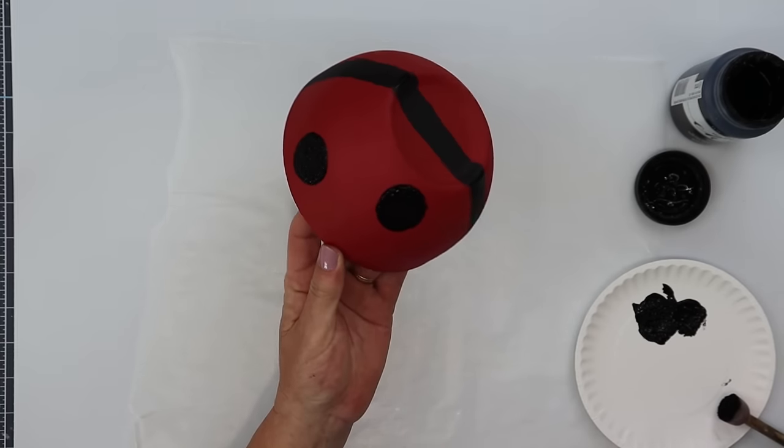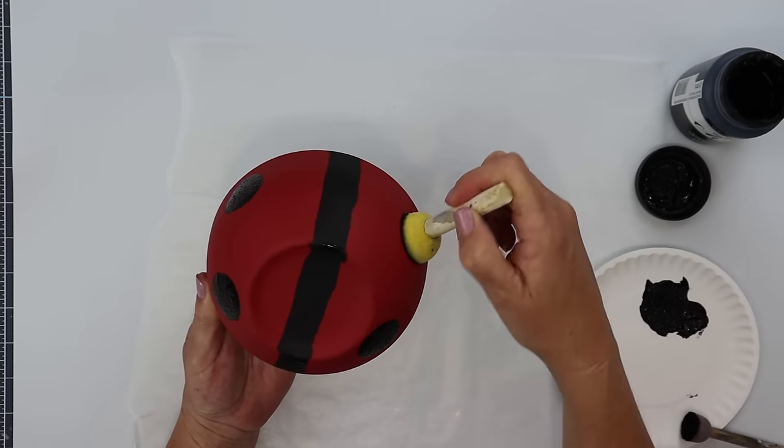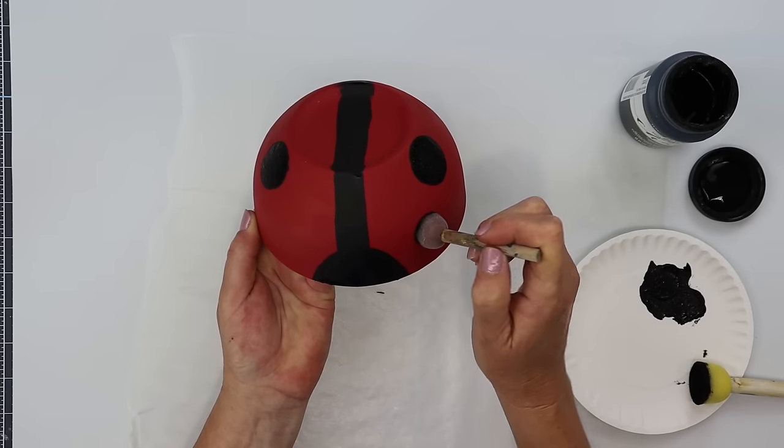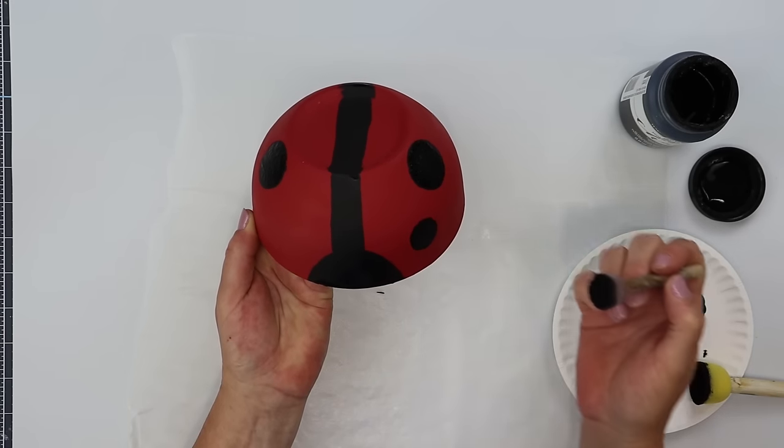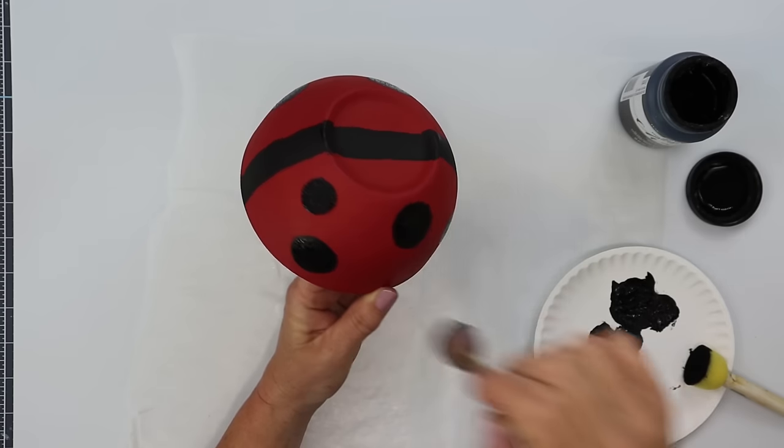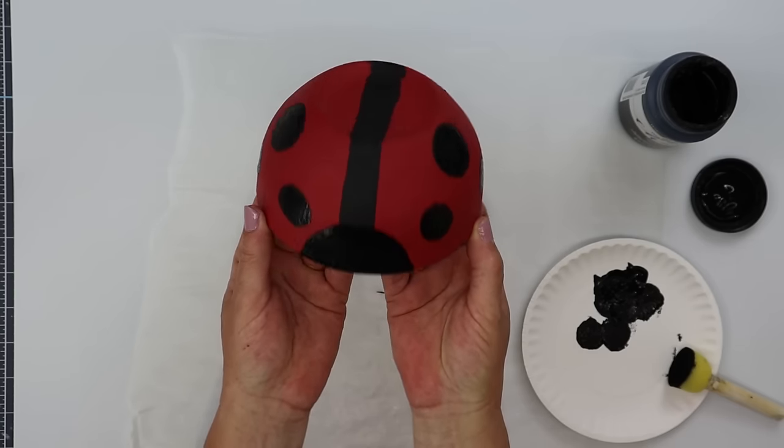I'm going to add a couple of those on each side of the line and then we'll take the smaller sponge brush to create some smaller circles throughout on each side. You can add as many dots as you like to create this beautiful ladybug. Make sure you allow that to thoroughly dry. This is how mine is looking.